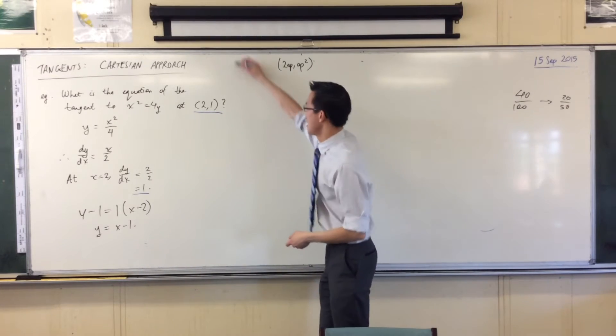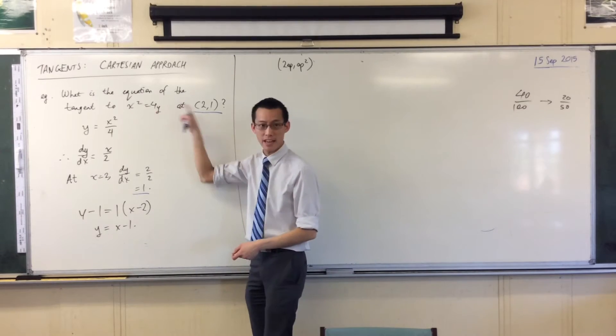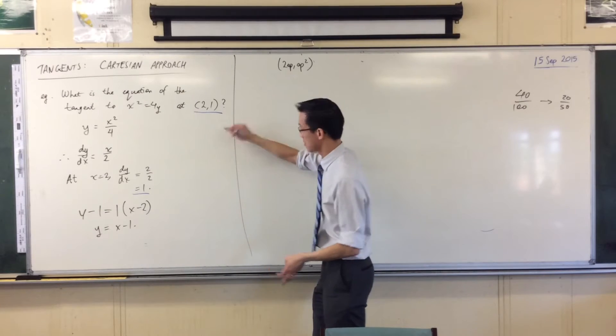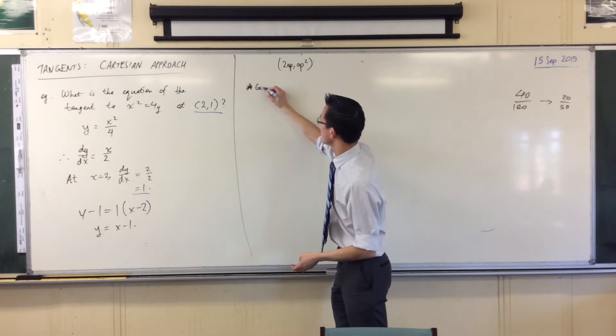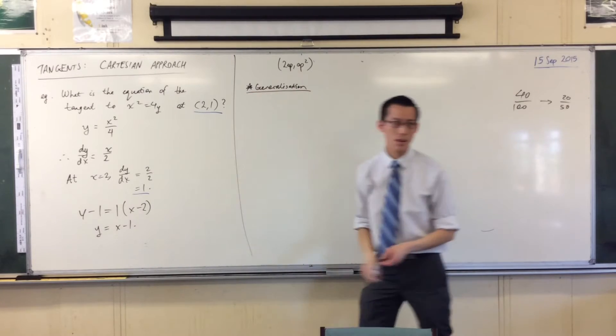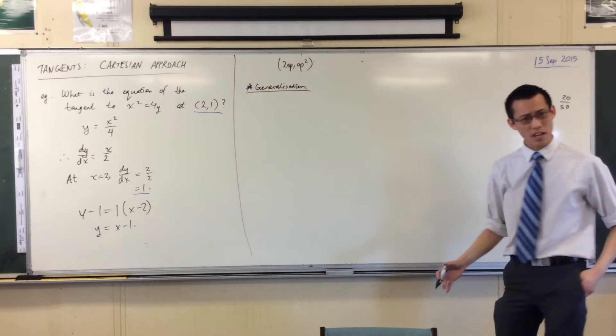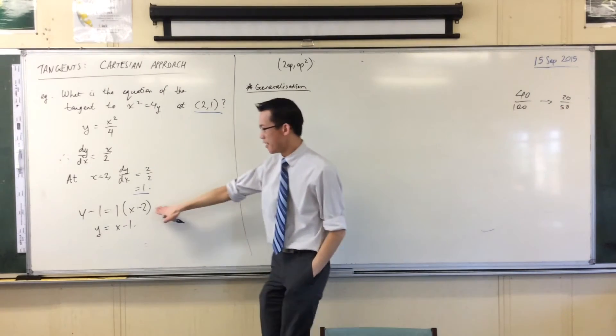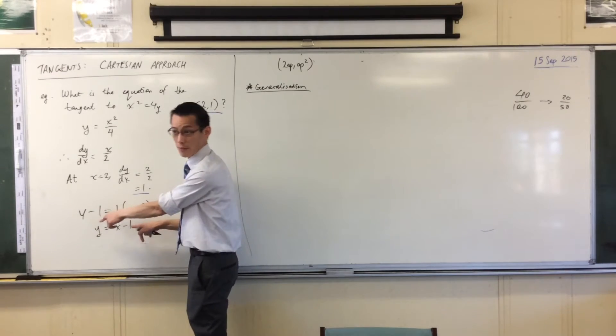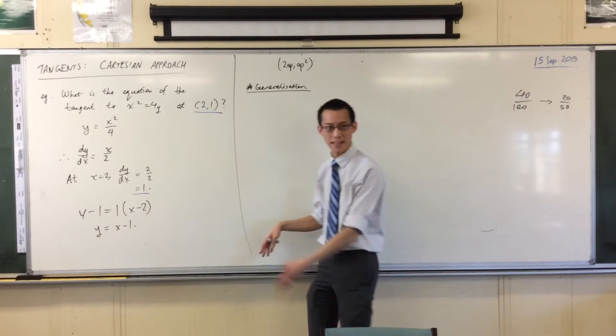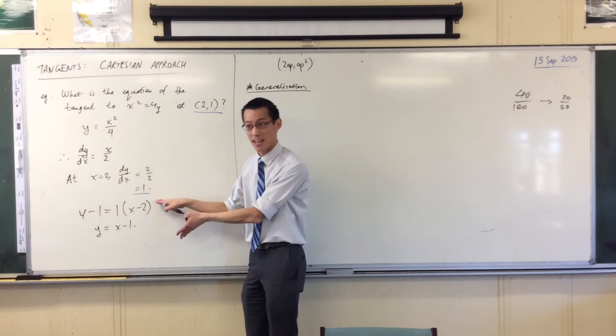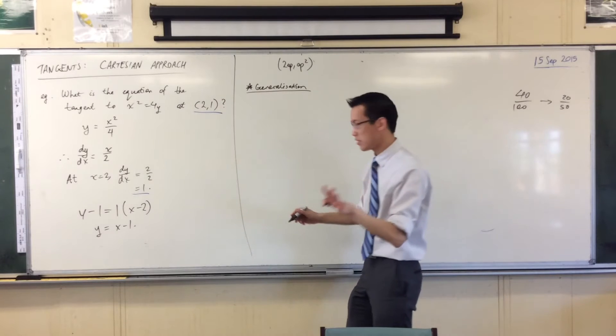I want to generalize from this. This is for a specific parabola and a specific point. So if we have some kind of general parabola, I want to come up with a formula for this kind of thing. Just like we have the equation of a line with a given gradient and through a given point, can I do some generalization to have an equivalent Y minus Y1 equals M times X minus X1 for this problem?